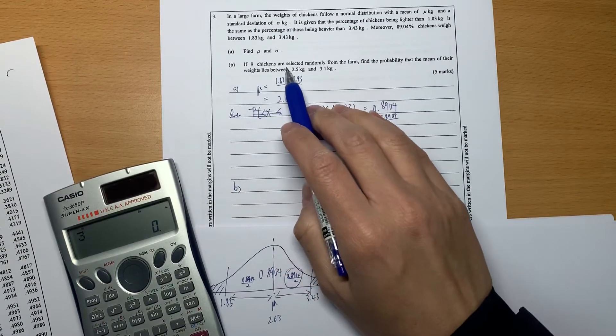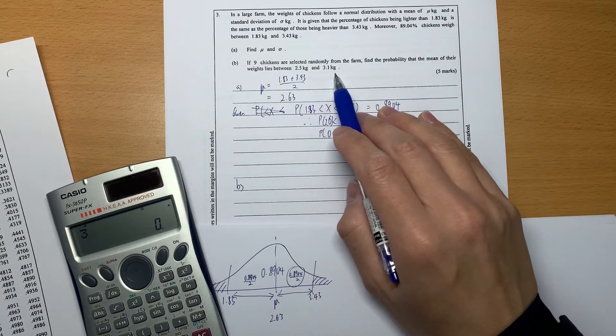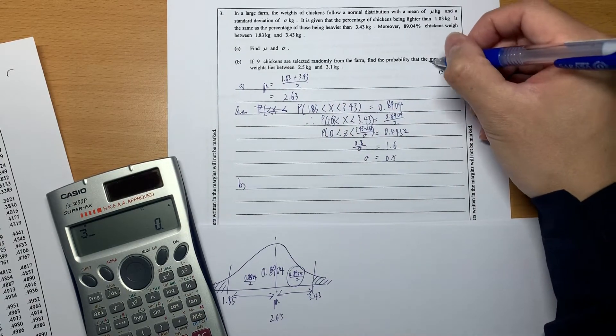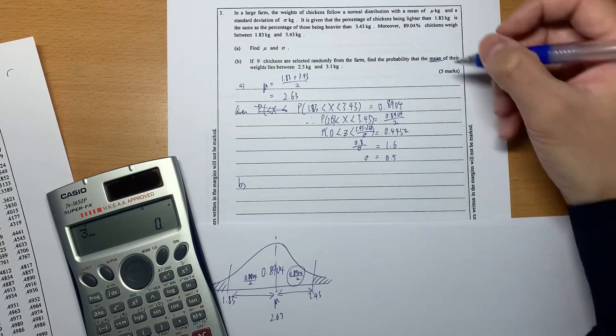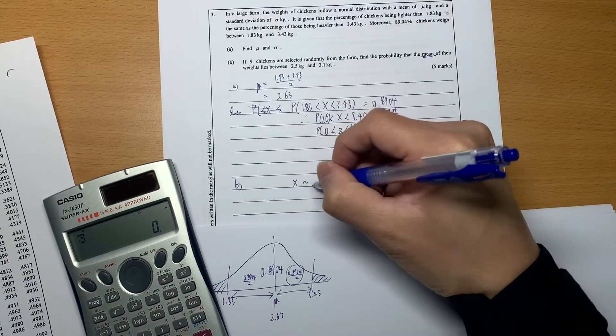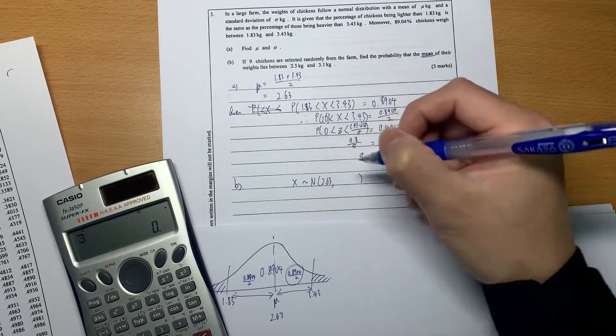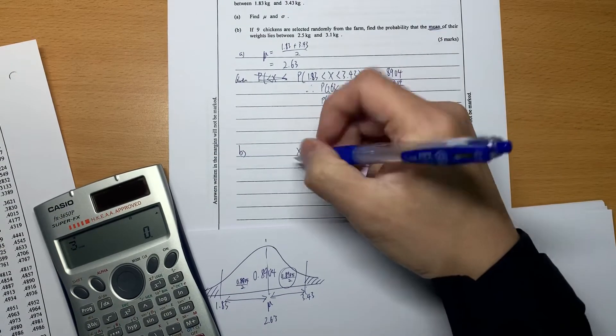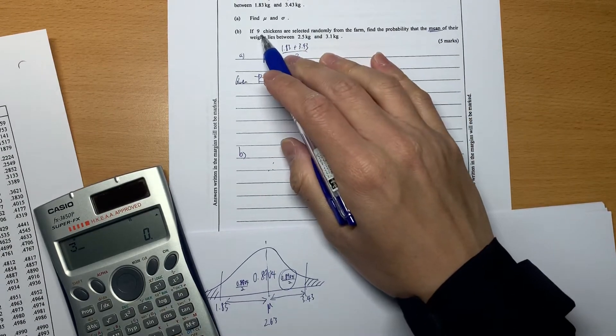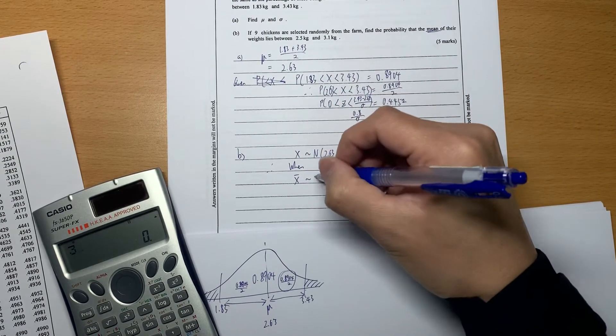If 9 chickens are selected randomly from the farm, find the probability that the mean of their weight is between this amount. The very important thing is you identify - are we talking about the weight or the mean of weight? Now we are talking about the mean of their weight. What we're interested in is not the weight of a chicken. This is the weight of a chicken: 2.63 and 0.5 squared. What we are interested in is when we choose 9 chickens. When the sample size equals 9, we are interested in X-bar instead of X.